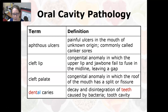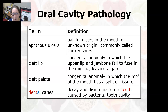A cleft lip is a congenital anomaly — something you were born with — in which the upper lip and the jaw bone fail to fuse in the midline and it leaves a gap. This is a concern for babies because it might interfere with their feeding.